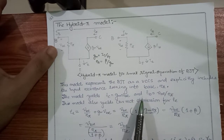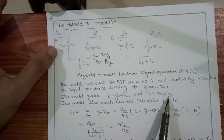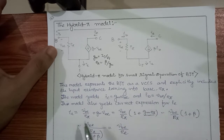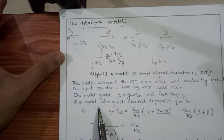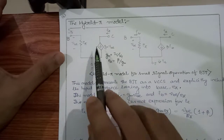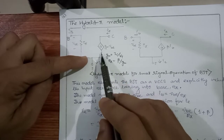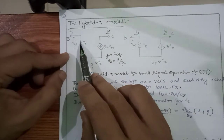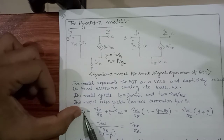We have already seen these two types of configuration before. The collector current I_C = G_m·V_be, and base current I_b = V_be / r_pi. This model also yields a current expression for I_e. We know I_e (emitter current) = V_be / r_pi, which equals I_b + G_m·V_be — there are two currents coming together. The emitter current is the sum of the base current (V_be / r_pi) and the collector current (G_m·V_be).